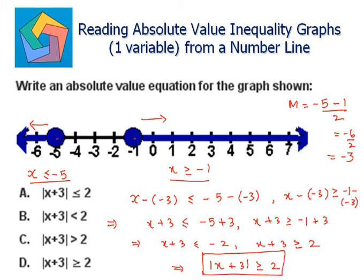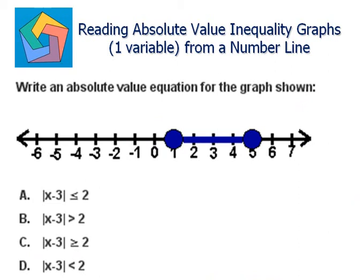Which is the answer. Next problem: write an absolute value equation for the graph shown. The solution is at 1 and 5 and between 1 and 5, so we can say 1 is less than or equal to x less than or equal to 5. We can clearly see the midpoint is at 3.